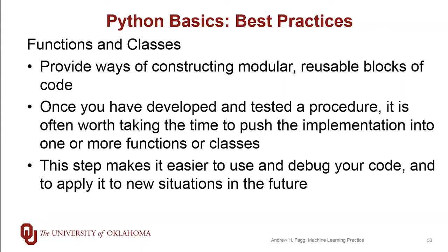Functions and object classes are mechanisms that allow us to build modular and reusable blocks of code. This makes it easier to code big solutions and helps us to more easily maintain code as we use it in lots of different situations. Although the scripting aspect is really useful, I encourage you that once you start to develop a solution that is more complete and solid, you then begin to push that implementation out into a function or into an object class. This will make it easier to apply the code you've implemented in new ways.